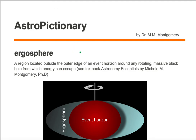Let's take a look at this ergosphere. The very first thing you need to have is a rotating black hole. If your black hole does not rotate then you don't have an ergosphere. You have to have a rotating massive black hole. Once you have a rotating massive black hole you create this ergosphere.